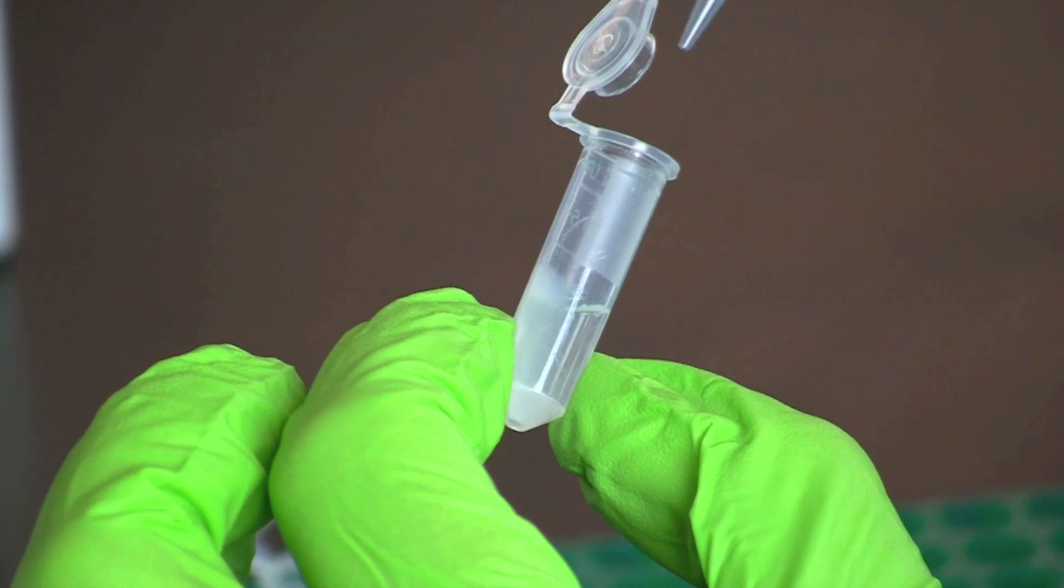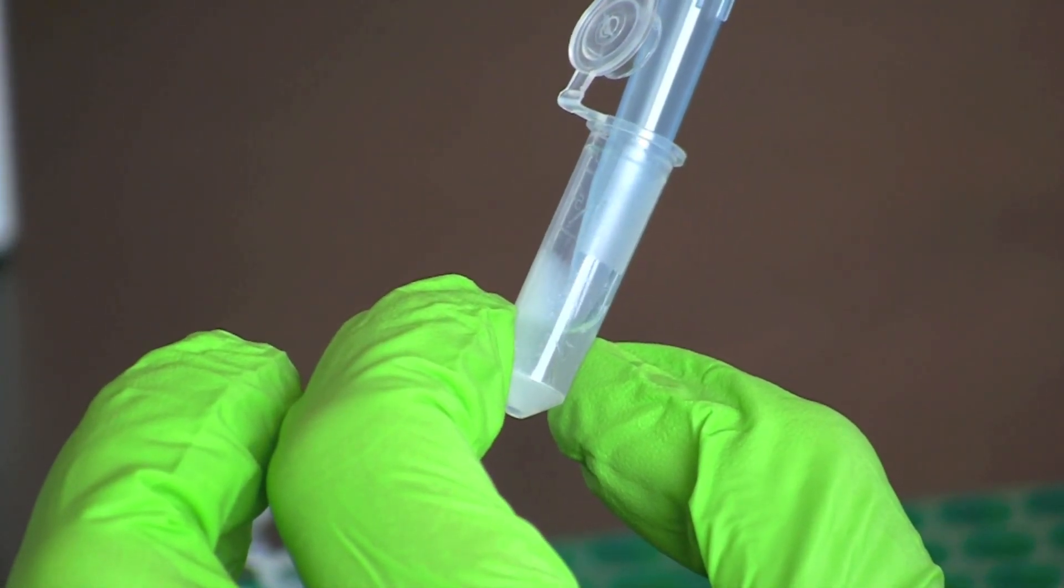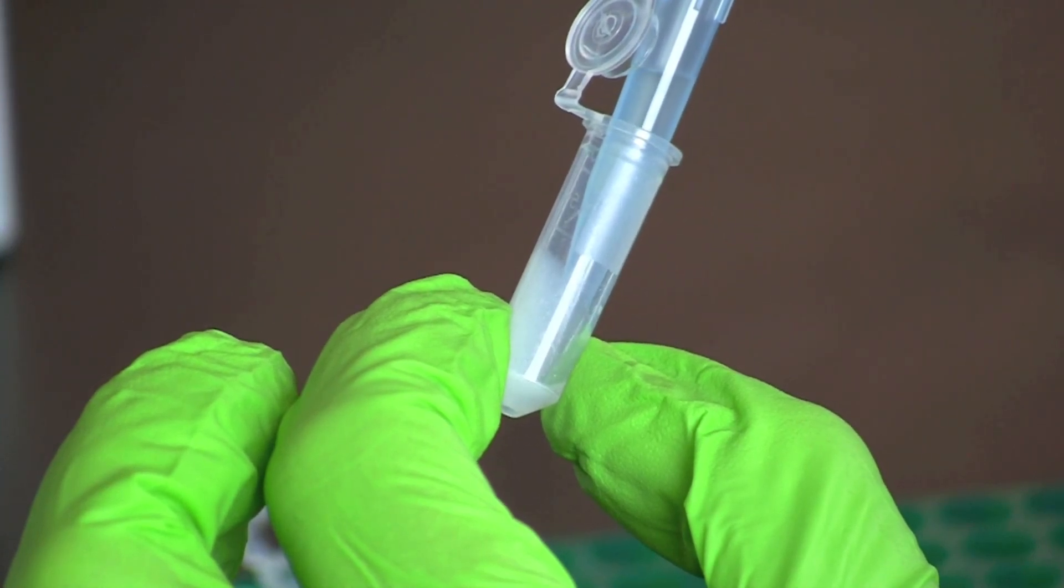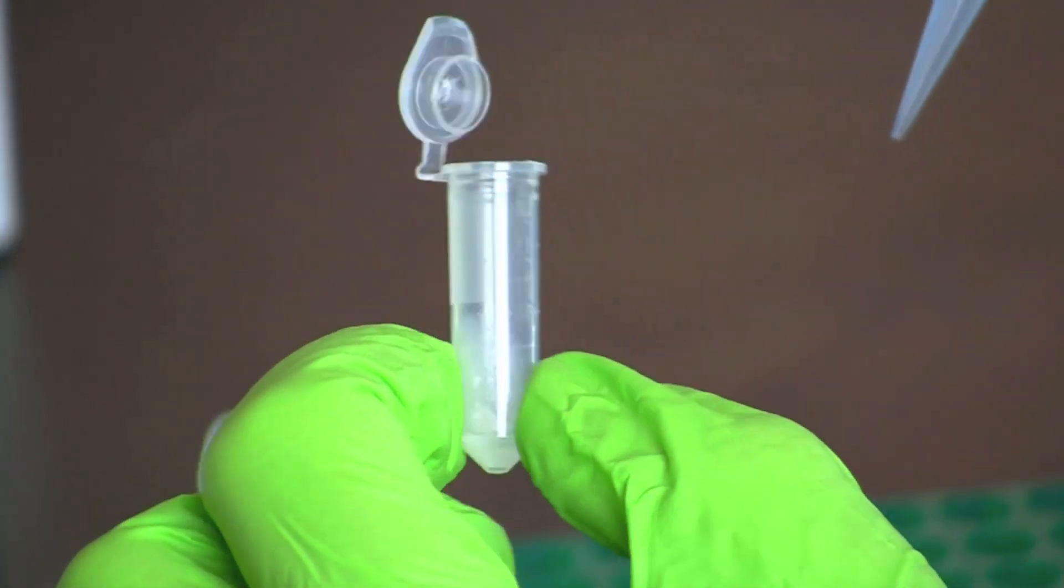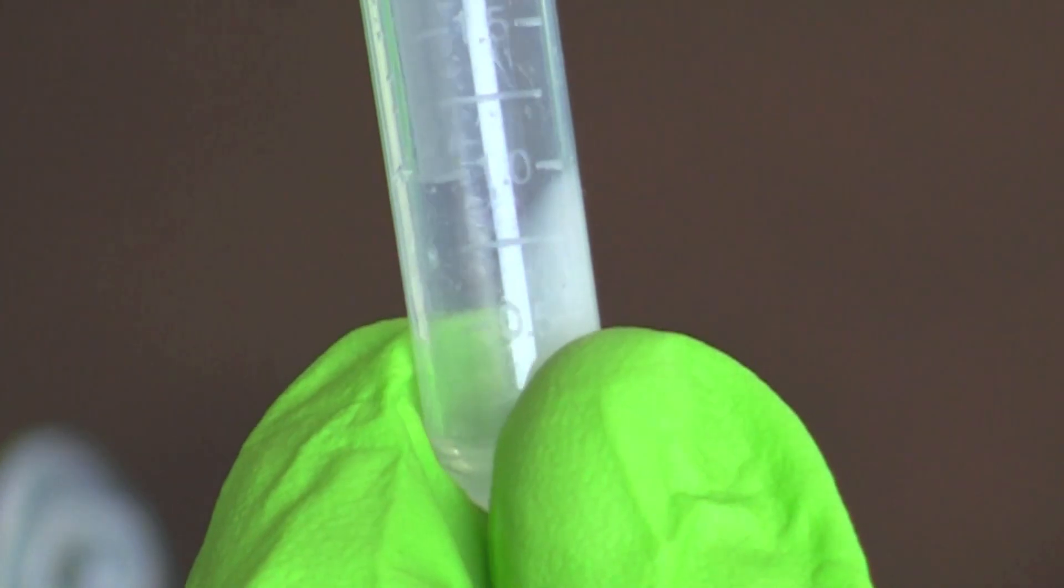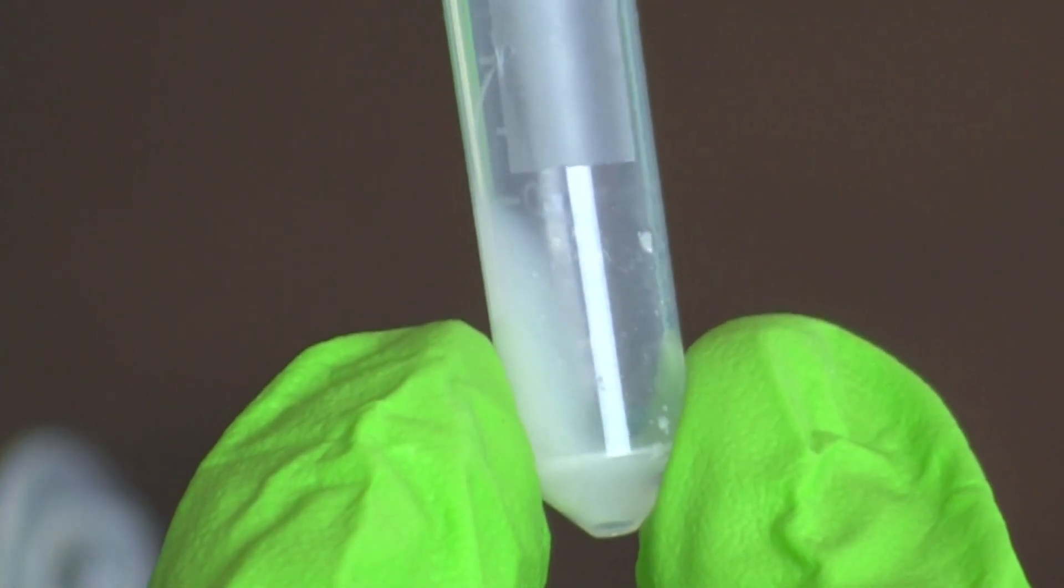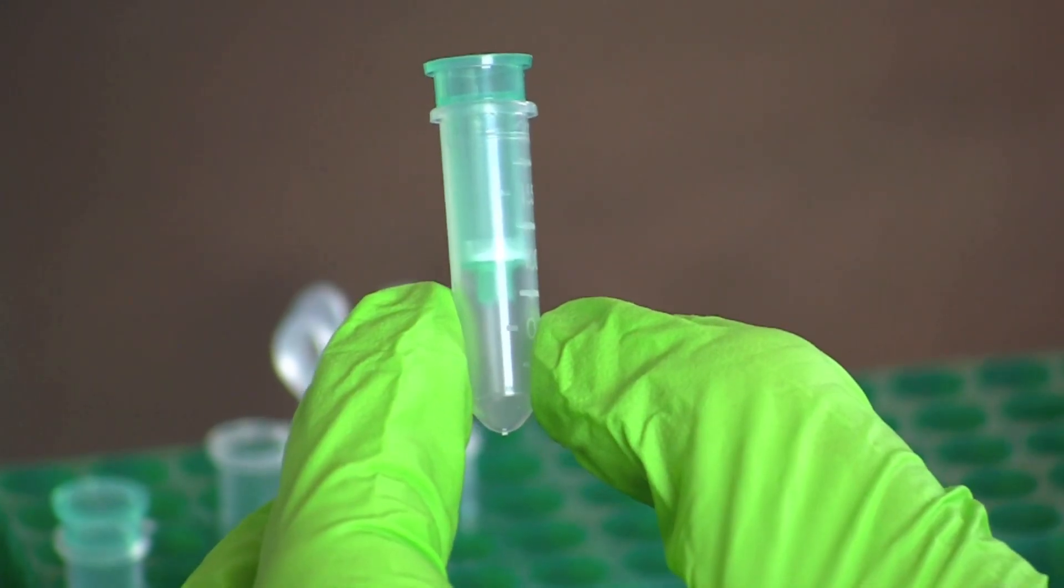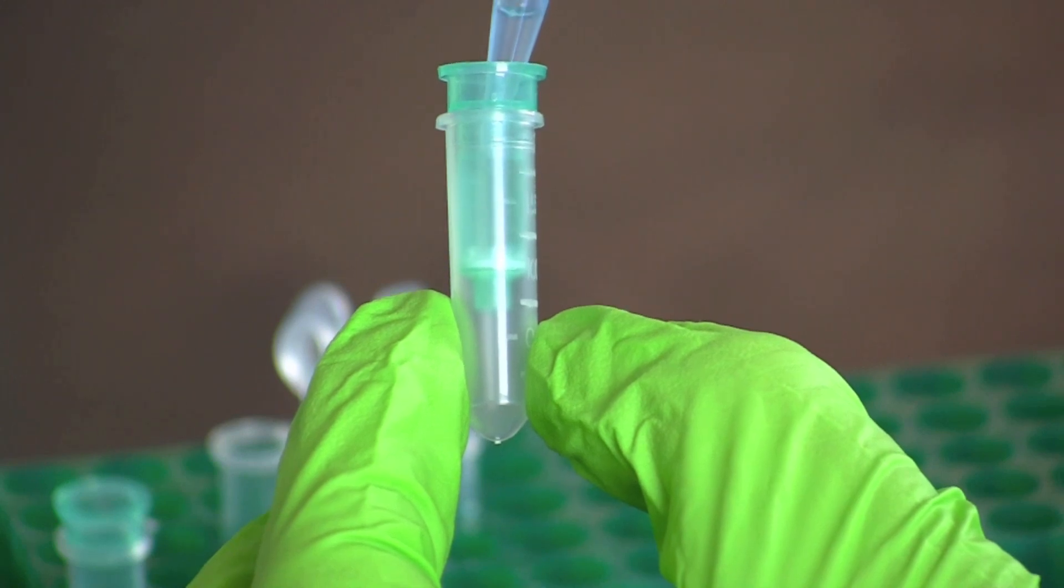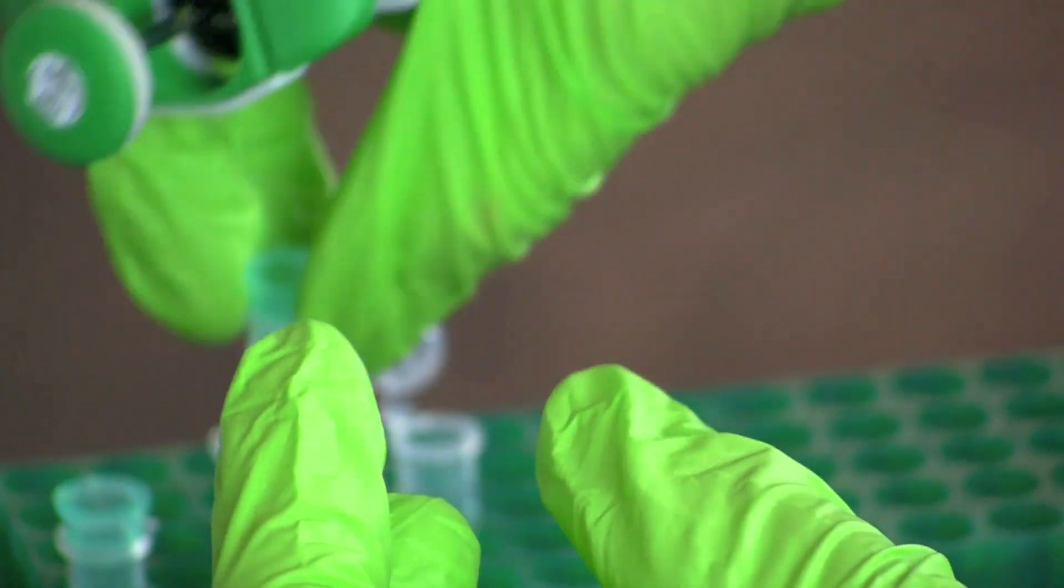Using a pipette, remove the supernatant from the centrifuge tube, being careful not to disturb the pellet. Notice that only the pellet is left in the microcentrifuge tube. Now transfer the supernatant that you removed into a green mini column. Repeat this procedure with your other sample and transfer the supernatant into a second green mini column.